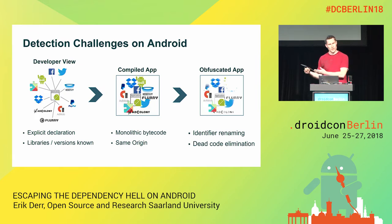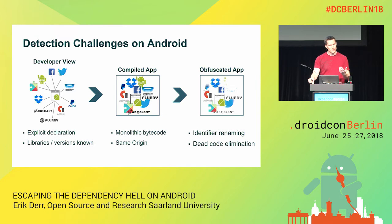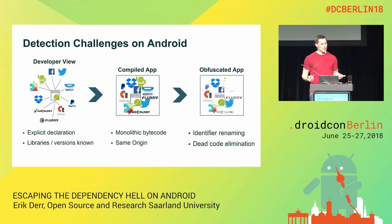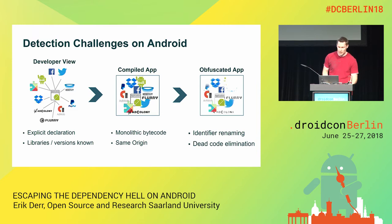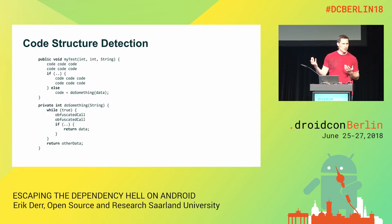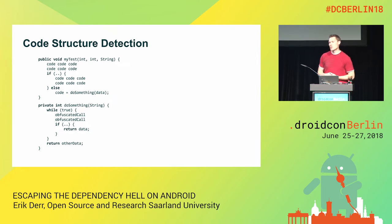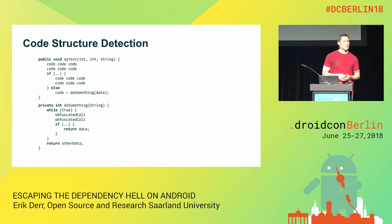These subsets may change for each application. Further, we need to be not only precise but also scalable — we're talking about Play Store scale, with more than three million applications. You don't want to wait a year for results. So how can we combine both precision and scalability? We had the idea: can we achieve high accuracy by not even looking at the bytecode instructions at all, but just at the code structure?